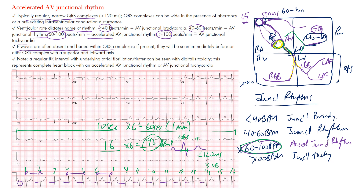You can also use the thick-line method: looking at consecutive QRS complexes, there are at least three thick lines between them. 300 divided by 3 is 100 beats per minute, but it's slightly more than 3 lines so it's just under 100 — and since it's more than 4 thick lines' worth (300÷4 = 75), the rate is between 75 and 100 beats per minute, closer to 100.